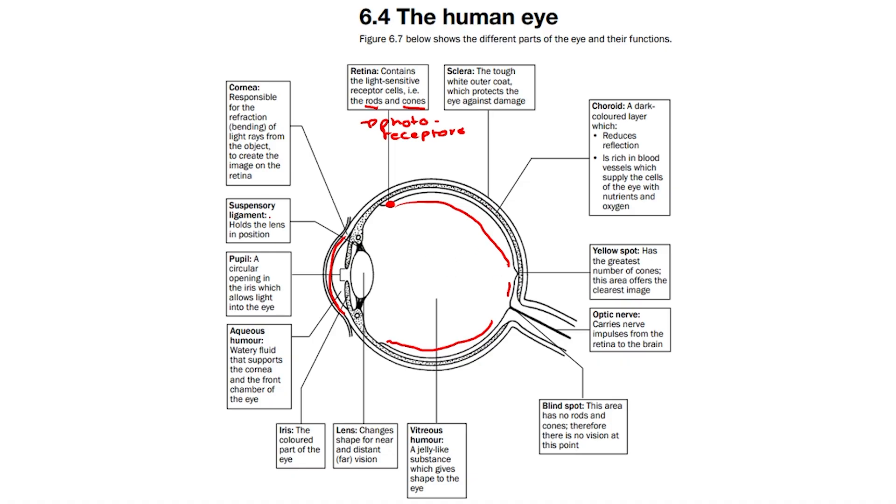We then have the suspensory ligament, which is this structure over here. These structures hold the lens in position, as this is the lens.